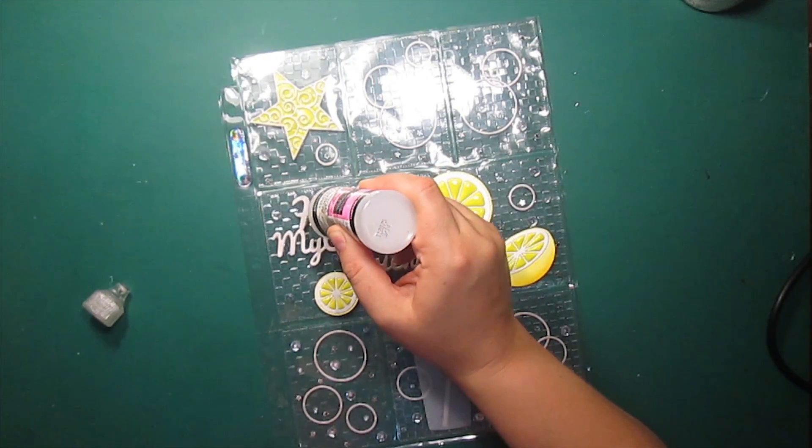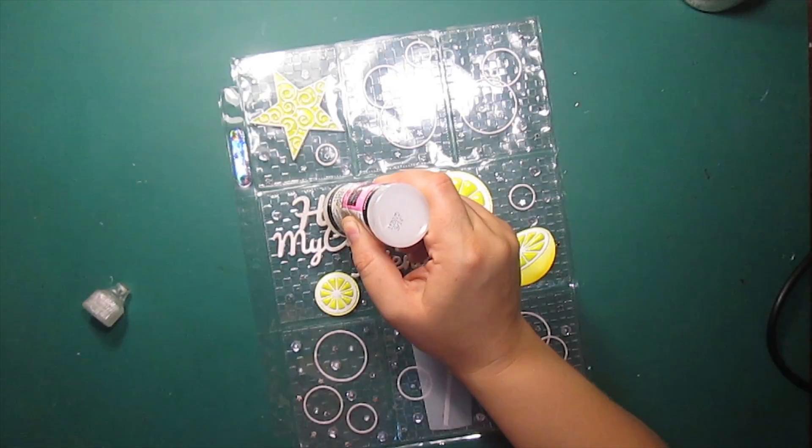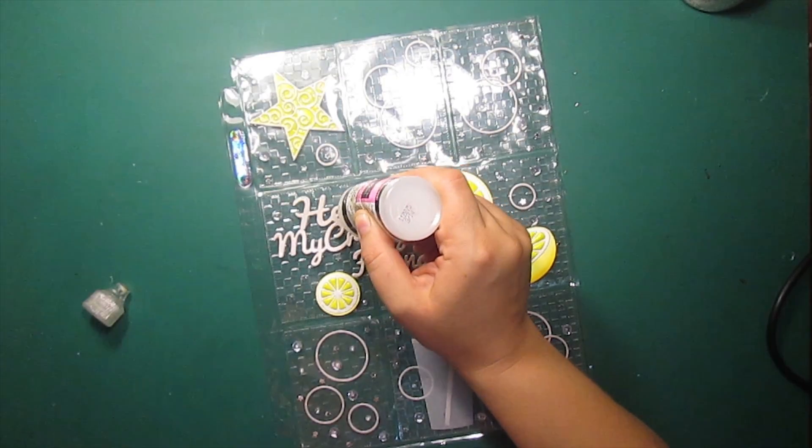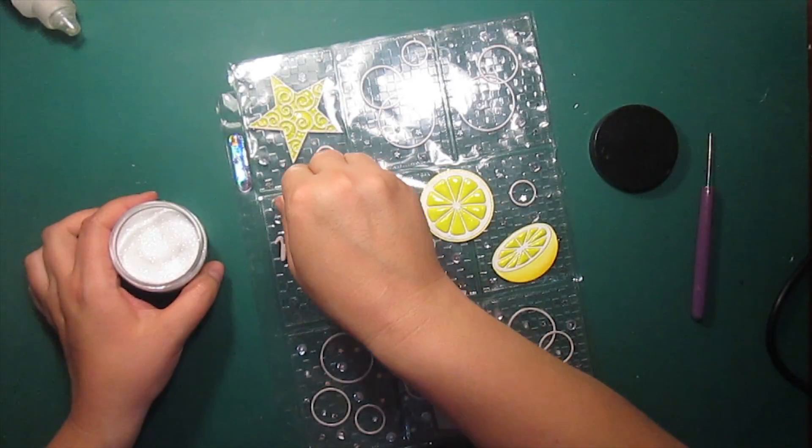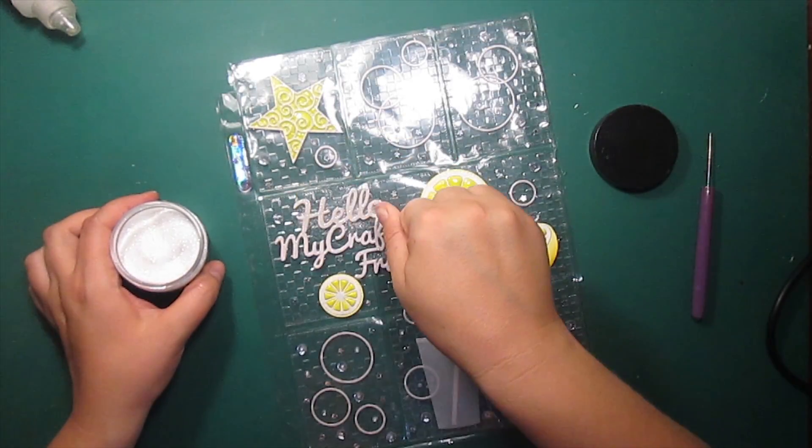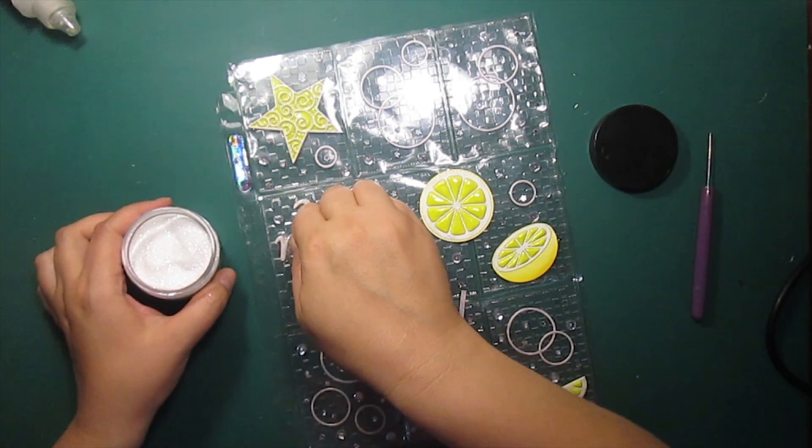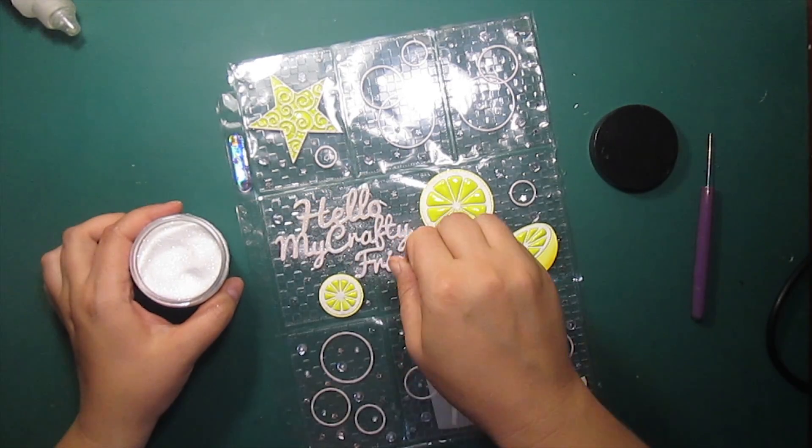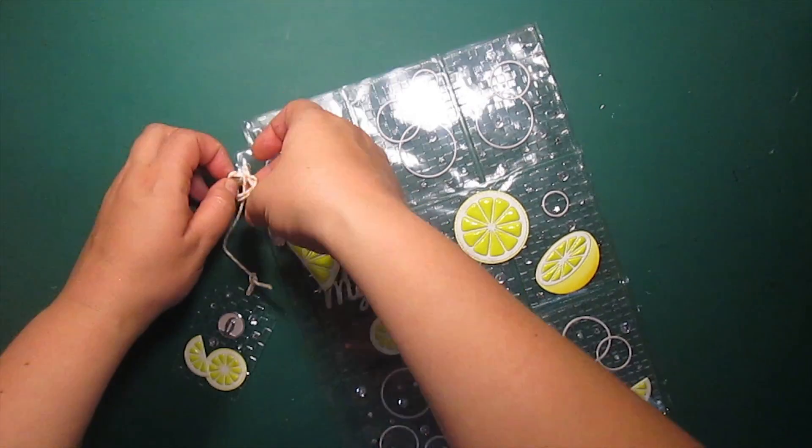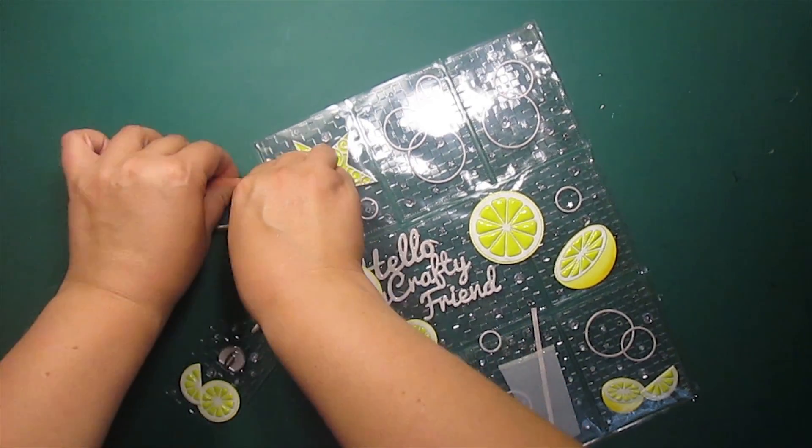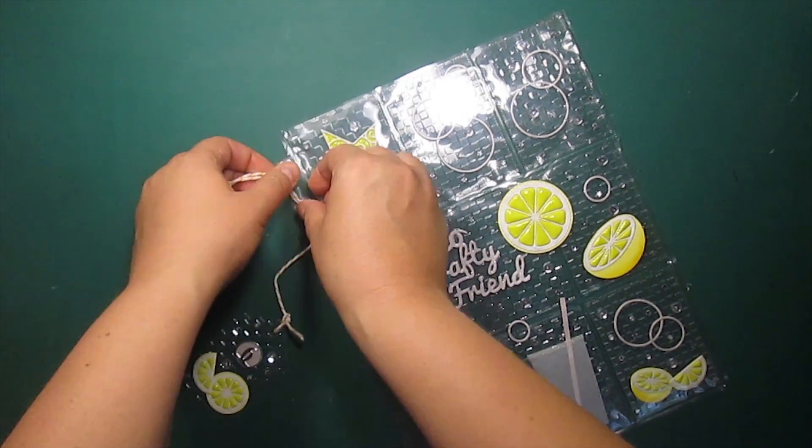As a finishing touch I'm covering the sentiment with glossy accents and rock candy distress glitter. Finally I'm tying the tags to a page and my pocket letter is finished.